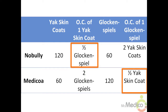To determine which country has the comparative advantage in the production of a good, you must determine which country has the lowest relative opportunity cost. For example, if Nobully can produce 120 yak skin coats or 60 glockenspiels, its opportunity cost of one yak skin coat is half a glockenspiel (60 glockenspiels ÷ 120 yak skin coats). If Medicoa can produce 60 yak skin coats or 120 glockenspiels, its opportunity cost of one yak skin coat is two glockenspiels. Nobully has the comparative advantage in yak skin coat production because its opportunity cost of half a glockenspiel is less than Medicoa's opportunity cost of two glockenspiels.